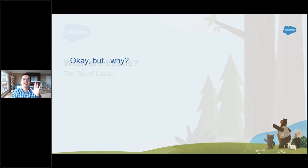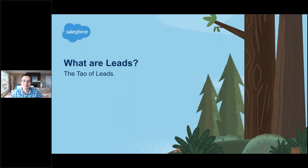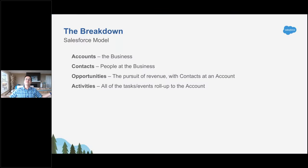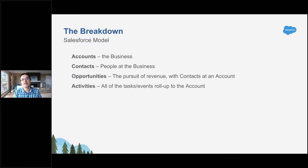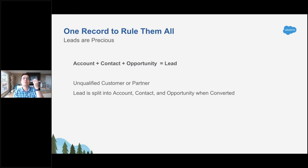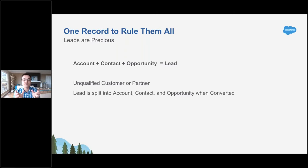Let's set the playing field here. What's an account? An account is a business. What are contacts? Those are people at those businesses. What's an opportunity? That's you trying to sell something to those people at those businesses — so there's a sales cycle. A lead is accounts, contacts, and opportunities all rolled into one. It represents a potential buyer business, a person, their email and phone number, and there's a chance of a deal — potentially revenue at the end of that record. So a lead is all three of those records in one, but it's an unqualified person.